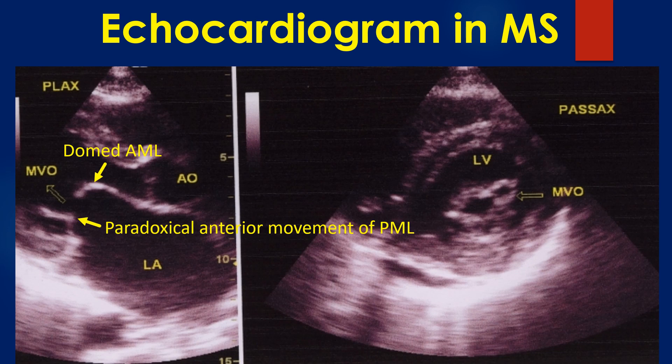The parasternal long axis view will give an assessment of the subvalvar apparatus. Subvalvar fusion may result in poor results after valvotomy as it can produce secondary obstruction beyond the valve. The parasternal short axis view is used for quantitating the severity of mitral stenosis by planimetry to measure the mitral valve orifice. Commissural fusion and calcification, if present, can be seen well on the parasternal short axis view.